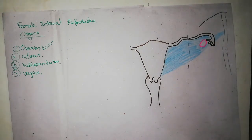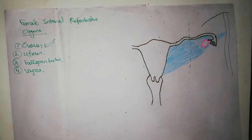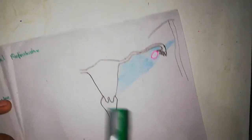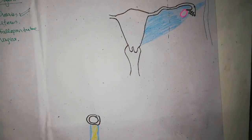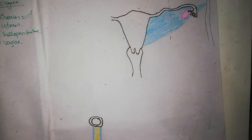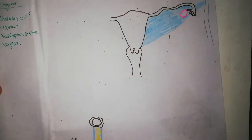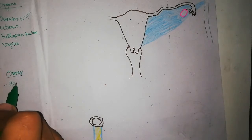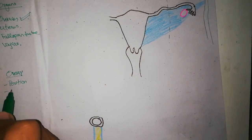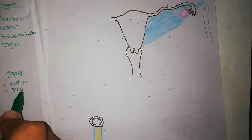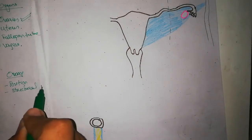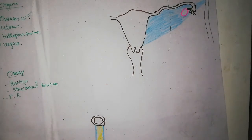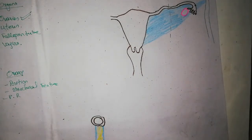We are going to talk about the ovaries. Ovaries are female gonads. When we talk about the anatomy of the ovary, we should first talk about its position, then its structural features, and then its peritoneal relations.